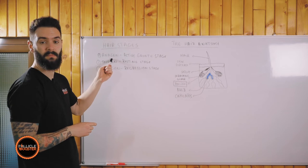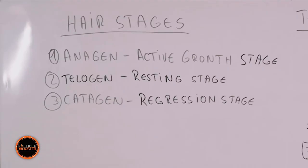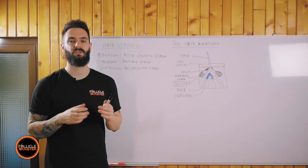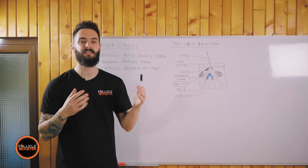So the third stage is the catagen and this is the regression stage. The regression stage means that your bulb, your follicle bulb won't receive any more nutrients or will receive less nutrients and your hair follicle is starting to be thinner and thinner.